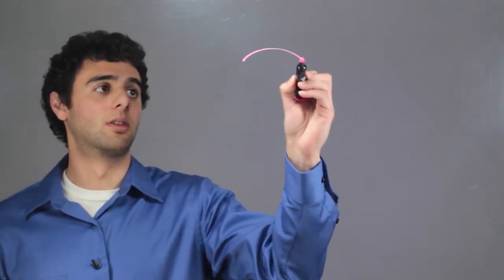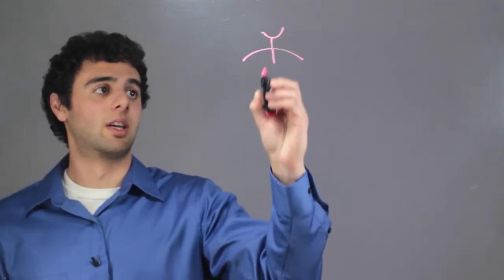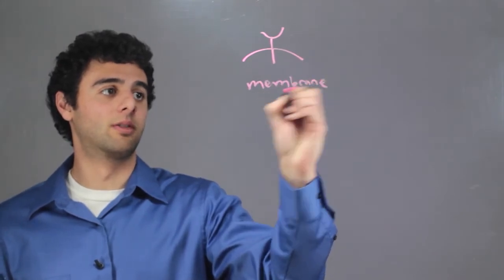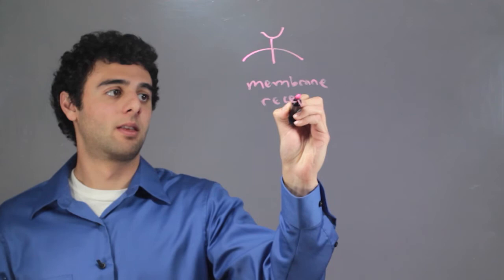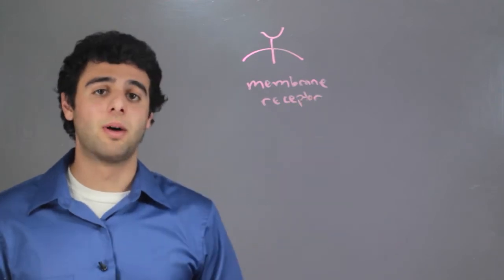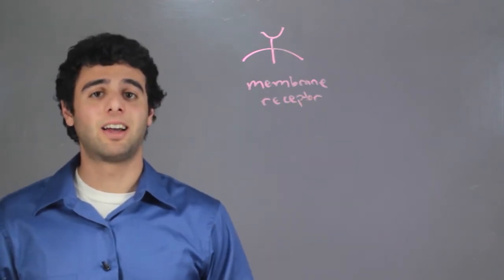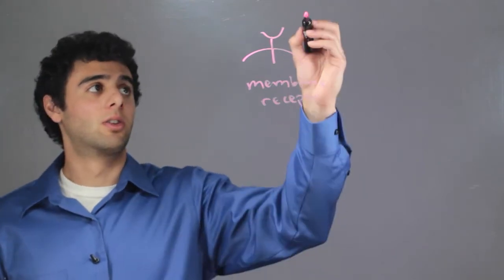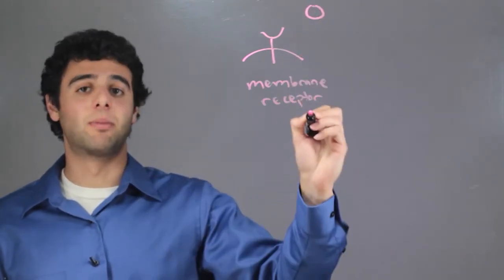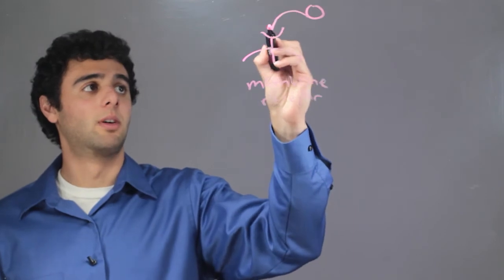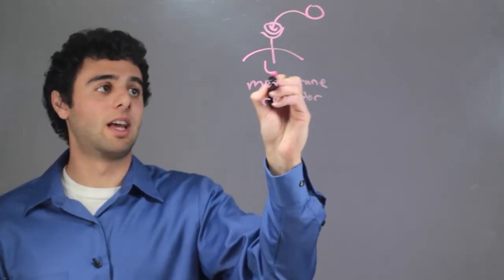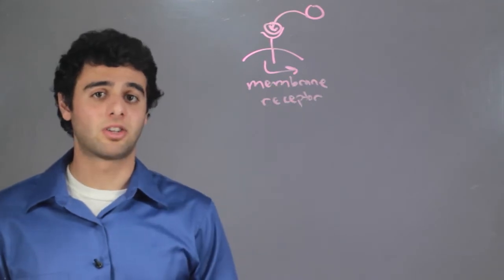The first example is a membrane receptor. A membrane receptor can activate a reaction when a ligand binds to it. A ligand of the right shape will come attach to the membrane receptor and then downstream you can have a reaction initiated.